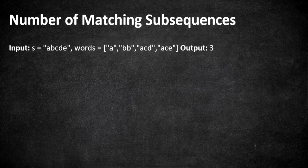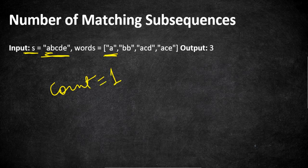Let's understand this problem with an example. We have to find whether the words are subsequences or not. Subsequences mean the characters in the words given in the words array must match the characters in s without changing their relative order. For example, s is 'abcde' and the first word given is 'a', which is a character present in the string, so it is a subsequence — we add one to our result. Moving to the second word 'bb': we don't have two b's in the given string, so this cannot be a subsequence.